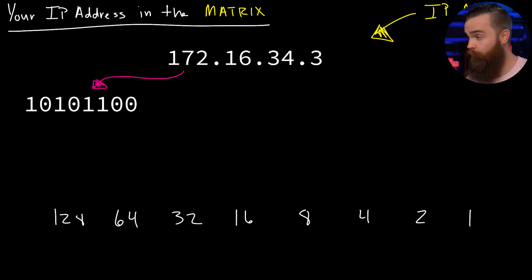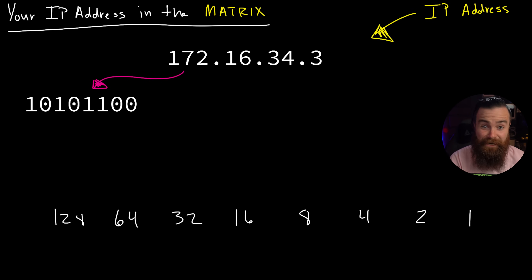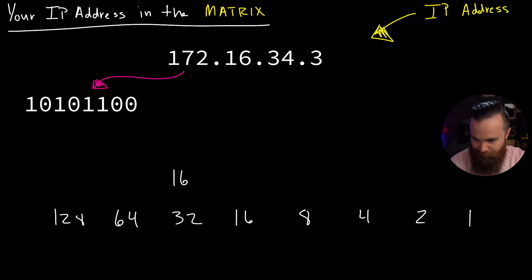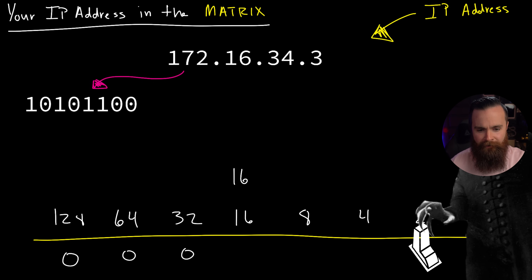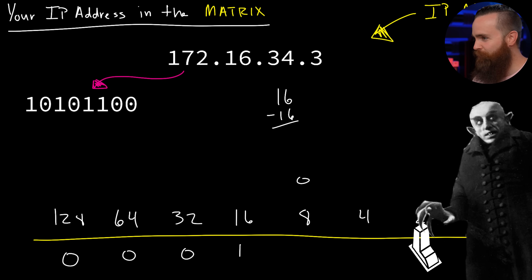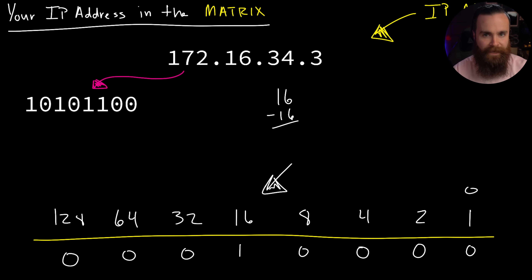Now try the next octet: 16. Pause the video and see what you get. Walking through it: 16 can't have 128, 64, or 32 taken from it - so those are all off, zero. When we get to 16: yes! We can take 16 away from 16 - turn that bit on. 16 minus 16 is 0. Then going down the line: can we take 8, 4, 2, or 1 from 0? No. So the rest of the bits are turned off. That's 16 in binary: 0, 0, 0, 1, 0, 0, 0, 0.